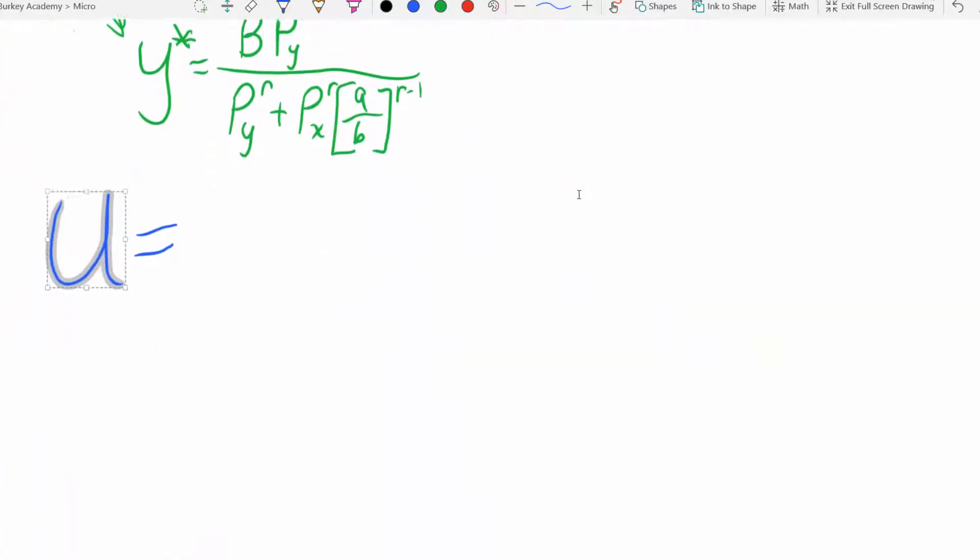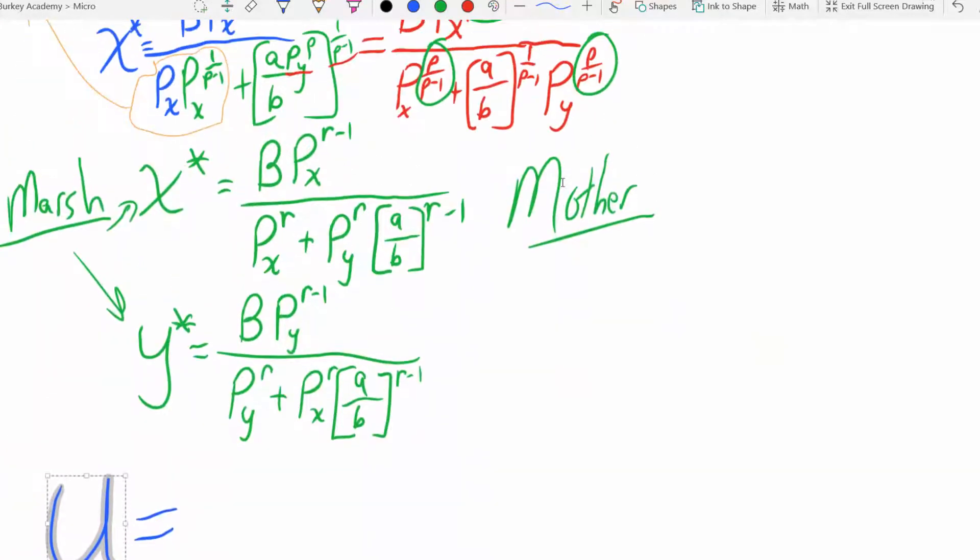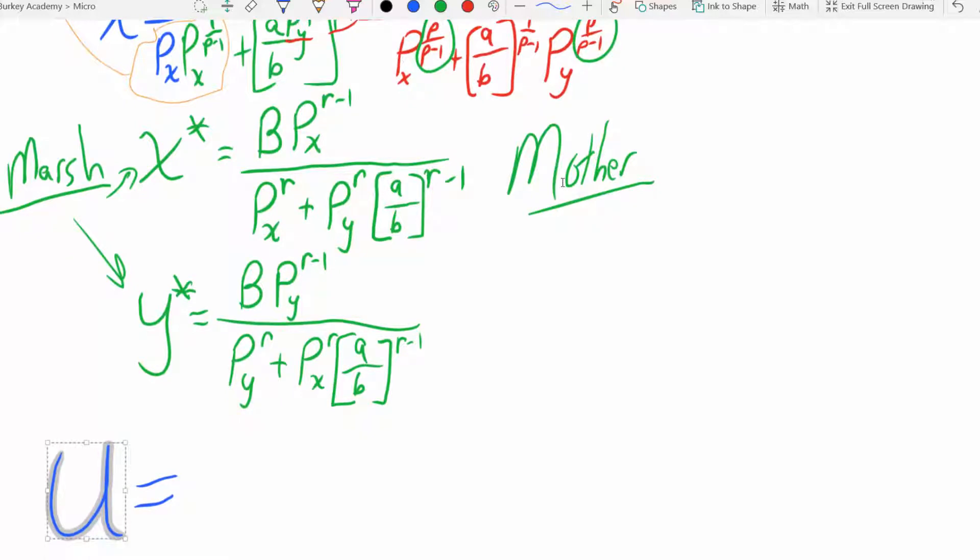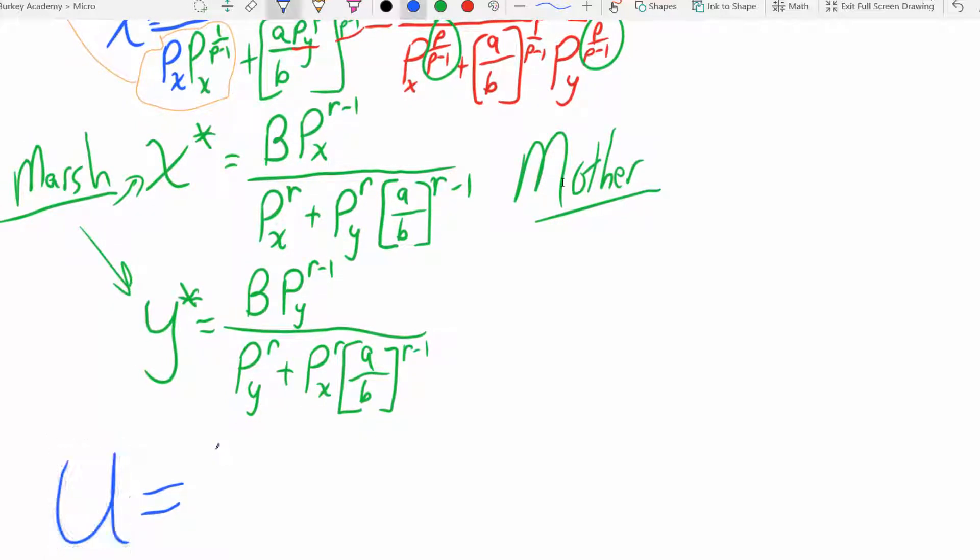So we just want to plug in x star for x and y star for y. So what we're going to have here is a times x star. Let's just plug in that whole thing there: B Px to the r minus one, Px to the r plus Py to the r, and then this optional a over b to the r minus one, all to the ρ.